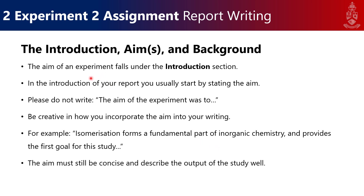If you put everything under one heading called 'introduction,' the first paragraph should always start with your aim — what you're going to study. Then the background elaborates on the necessary theory and what has been done, why this is important, and why it is necessary to study. It's about five paragraphs, a page to a page and a half, depending on the study. If using two headings, the introduction is about two paragraphs and the background about three paragraphs, give or take.